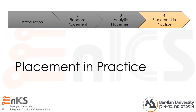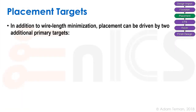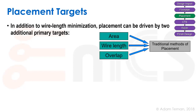Having discussed the placement algorithms, let's go over to see how placement is done in practice in the backend tools. In addition to wire length minimization, placement can be driven by two additional primary targets. Here we see that area, wire length, and overlap are the traditional methods of placement.